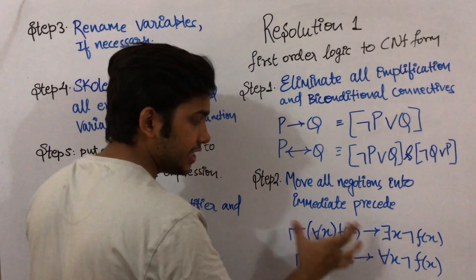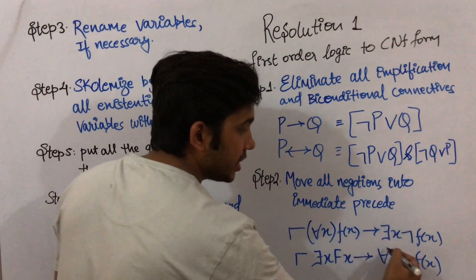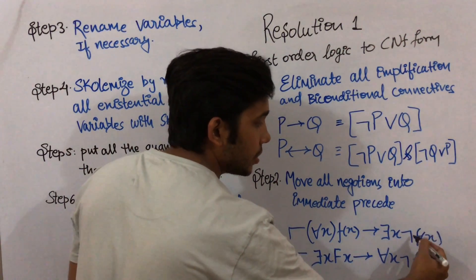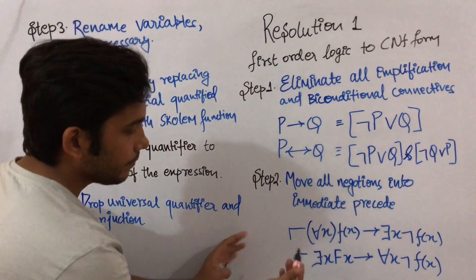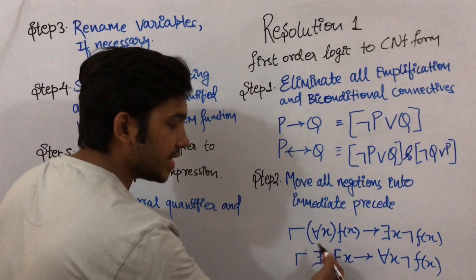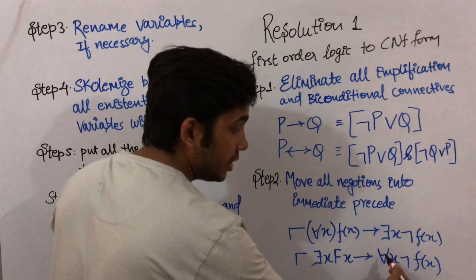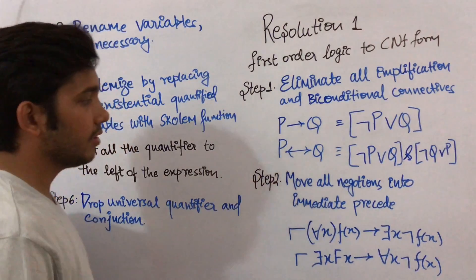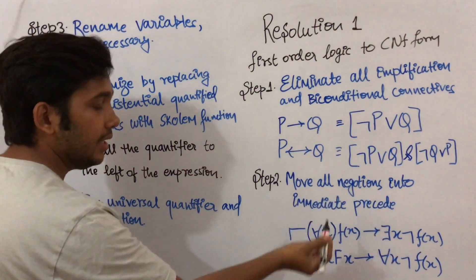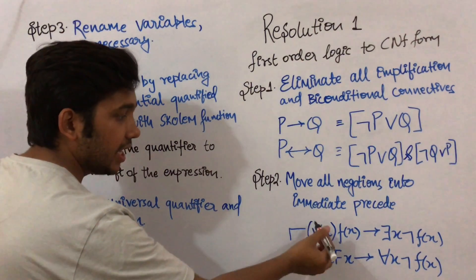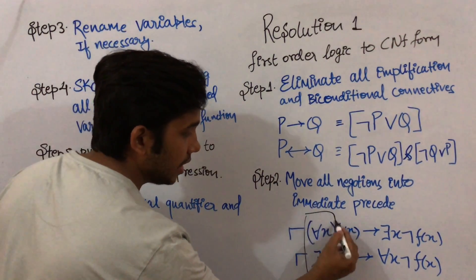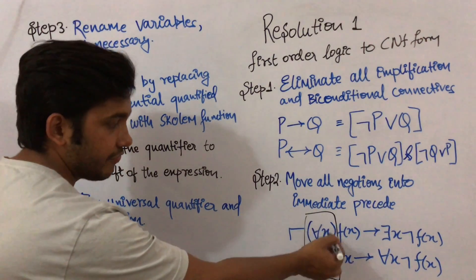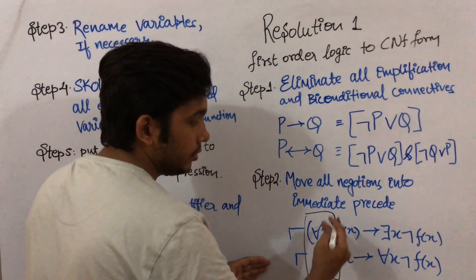When we do this process, the universal quantifier changes to the existential quantifier and the statement becomes: existential x, negation of f(x). Now if negation is in front of an existential quantifier, we replace it with the universal quantifier followed by negation of f(x). This step is applied when negation is present in front of quantifiers — in both cases, the negation is moved inward past the quantifier.